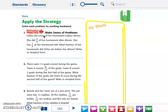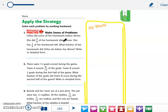So here we've got Chloe did some of her school homework before dinner. She did 2/6 of her homework after dinner. She has 1/6 of her homework left. What fraction of her homework did Chloe do before her dinner? Write in simplest form. We're not going to worry about the simplest form part.